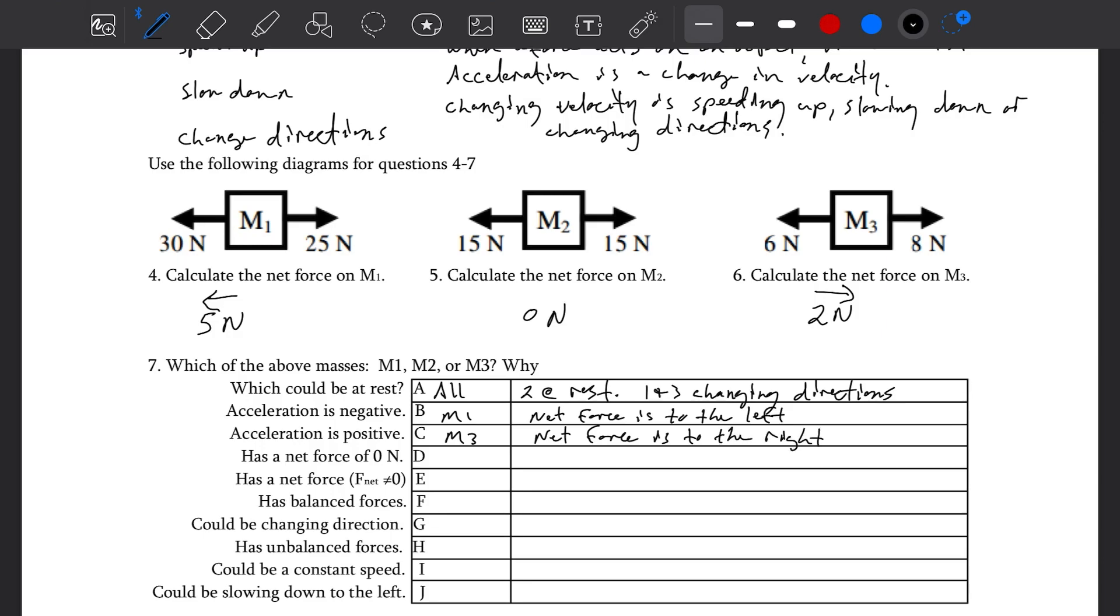Has a net force of zero newtons? That's only number 5. Has a net force not zero? Number 4 and 6 both have net forces, not zero. So M1 and M3. Has balance forces, only M2. No net force means balance forces. And summation of forces and net force, they're the same thing.